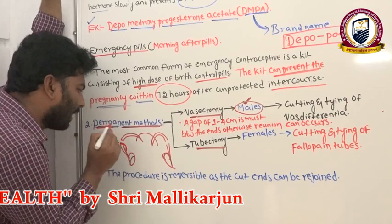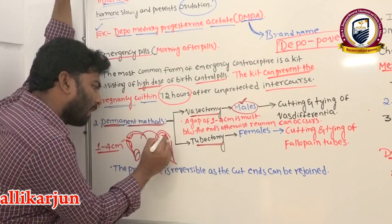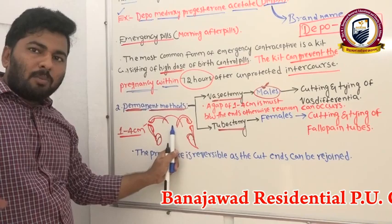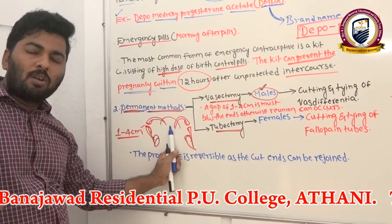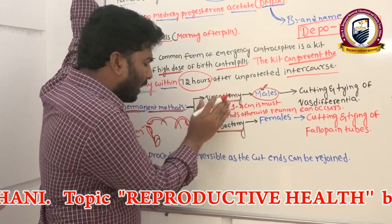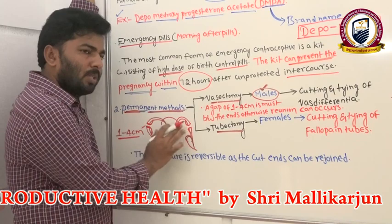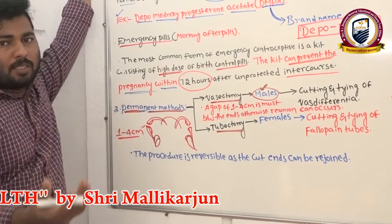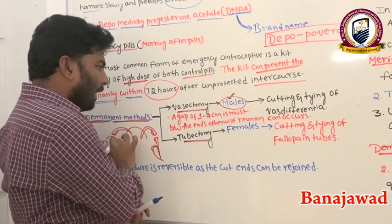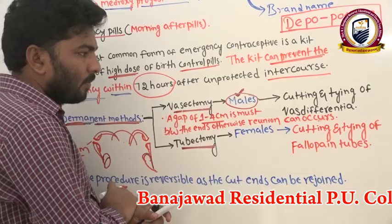After cutting, the tubes are tied back with threads on both sides. This prevents sperm from traveling from the testes to the urethra. Since sperm cannot enter the urethra, it cannot reach the vagina of the female, thereby permanently preventing pregnancy.